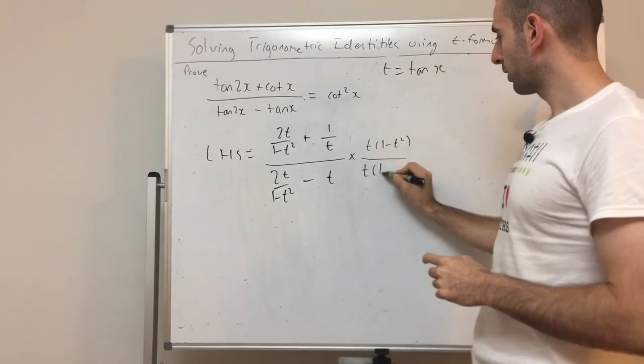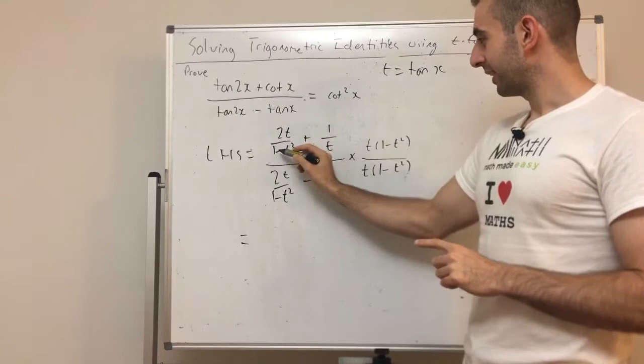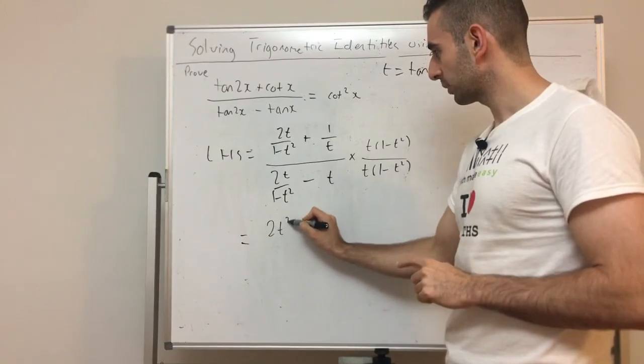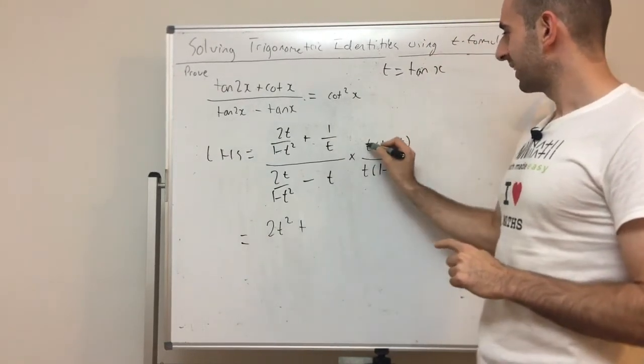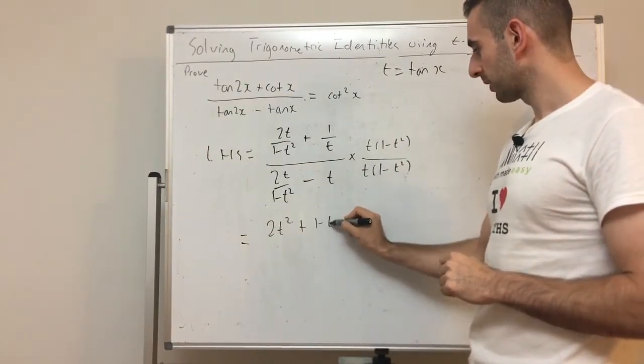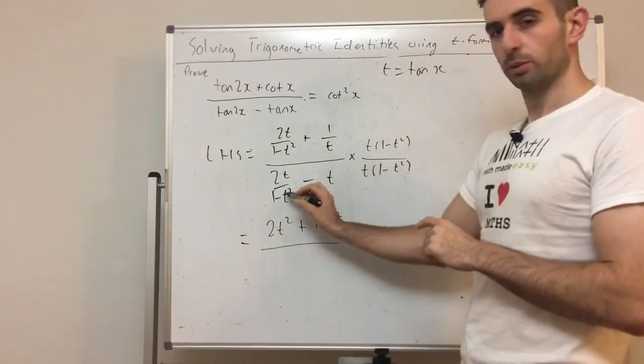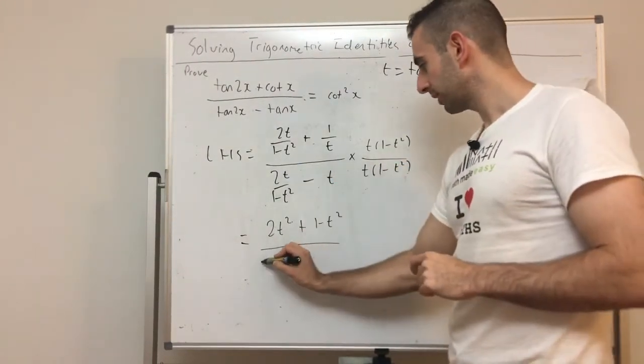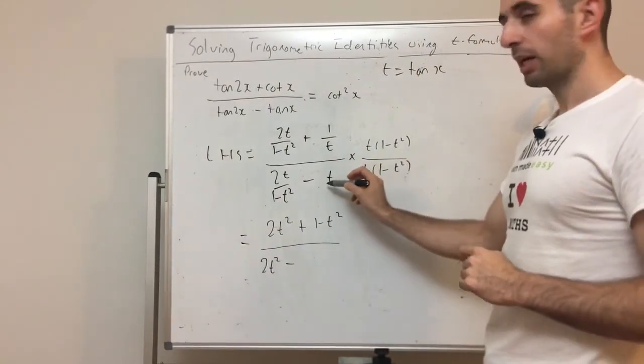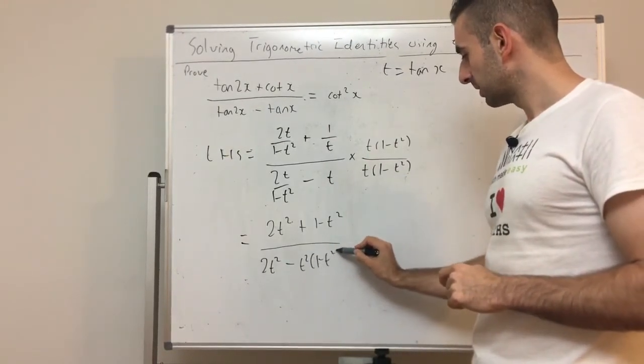So we times top and bottom. So when we times this fraction here, the 1 minus T squared cancels, but I'm left with a T. So times that with 2T, I get 2T squared plus. The T cancels here, so I'm left with 1 times 1 minus T squared. So that's just 1 minus T squared over. So again, the 1 minus T squared cancels. I've got T times 2T, so that's again 2T squared minus, now there's no fraction to cancel, so it's just T times all that. So we get T squared 1 minus T squared.